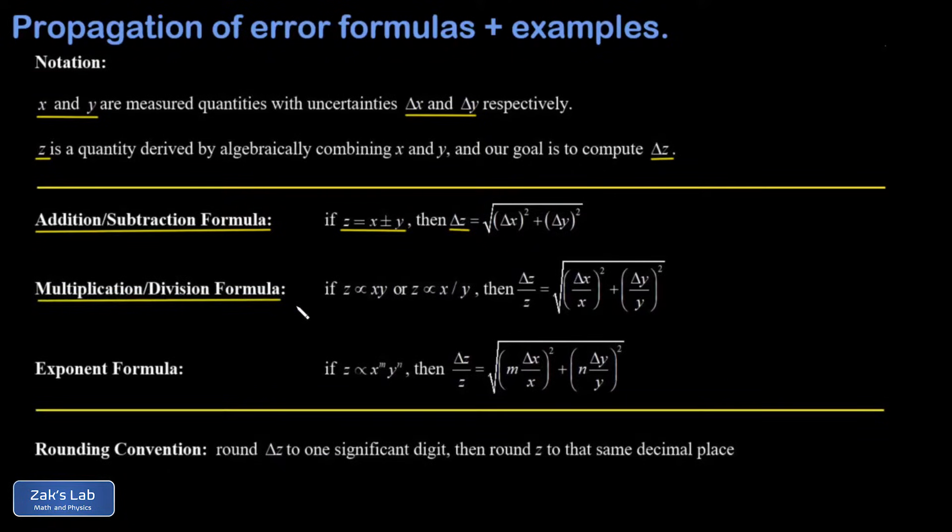The multiplication and division case: if z is proportional to a product or quotient of two measured quantities, then we switch to looking at the relative uncertainty. That's the uncertainty in z divided by z. In other words, that's like a percent uncertainty. And that again is equal to the square root of the sum of the squares, but this time it's the percent uncertainty in x and y that are being squared inside that square root.